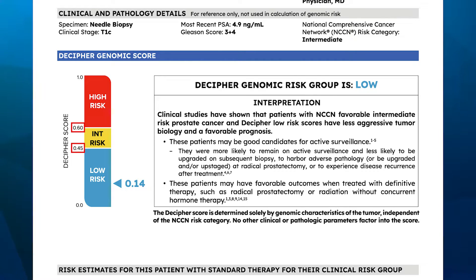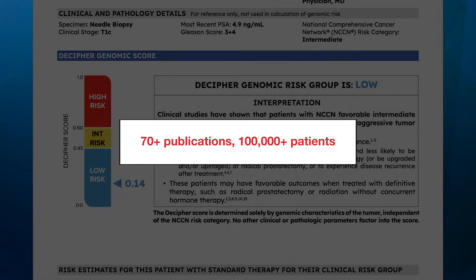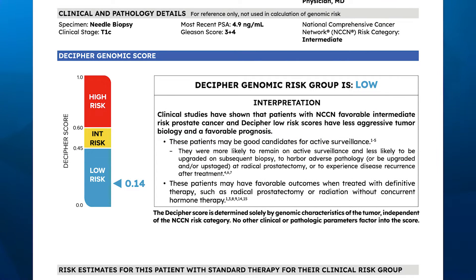Although there are three risk groups, the Decipher score is a continuous variable. So while a patient with a score of 0.68 and another with a score of 0.98 would both be classified as having Decipher high-risk tumors, the patient with the 0.98 Decipher score has a tumor with a higher risk of metastasis. The Decipher risk score reflects the patient's risk of developing distant metastasis and has been validated in over 70 published studies and trials. Currently, it's also being used as an integral biomarker in multiple prospective NCI-sponsored trials.